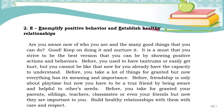E — exemplify positive behavior and establish healthy relationships. Are you aware now of who you are and the many good things that you can do? Good. Keep on doing it and nurture it. It is a must that you strive to be the best version you can be by showing positive actions and behaviors. Before, you used to have tantrums or easily get hurt, but you cannot be like that now for you already have the capacity to understand. Before, you took a lot of things for granted, but now everything has its meaning and importance. Before, friendship was only about playtime, but now you have to be a true friend by being aware and helpful to others' needs. Before, you took for granted your parents, siblings, teachers, classmates, or even your friends, but now they are important to you. Build healthy relationships with them with care and respect.